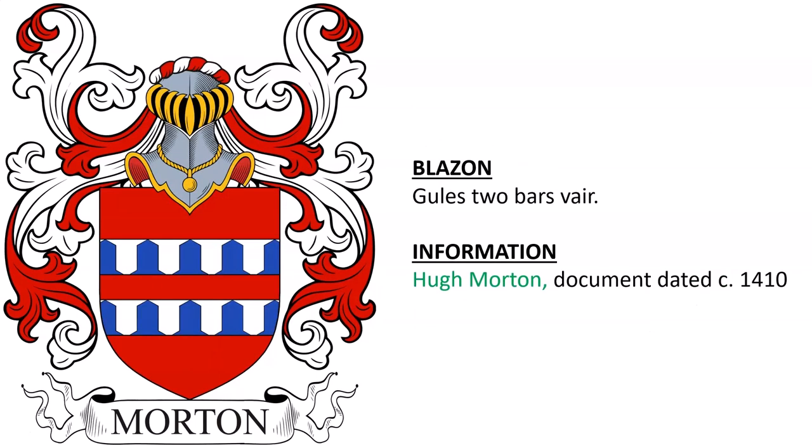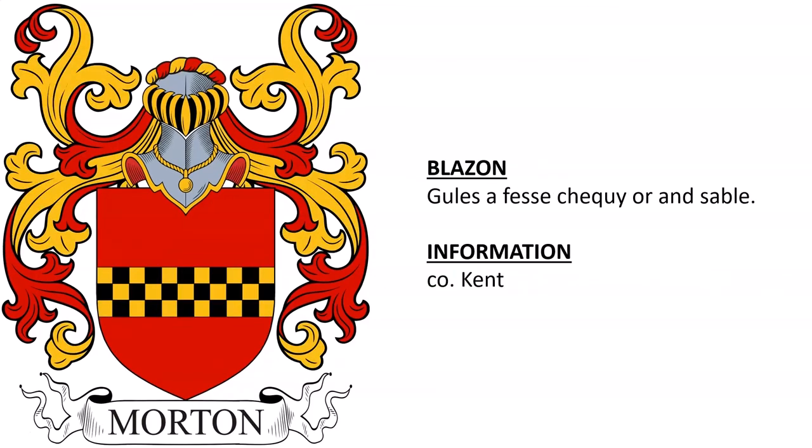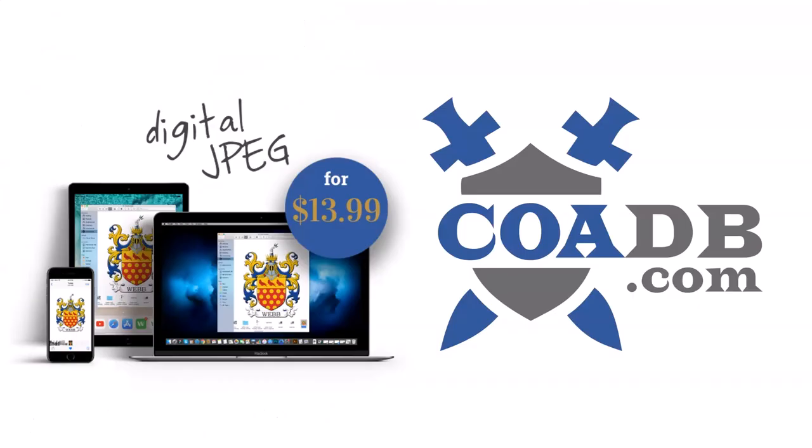Or, two bars. This was the arms of Hugh Morton, in a document dated around the year 1410. And one from County Kent. If you enjoyed this video, please visit us at coadb.com — link in the description. Thank you very much.